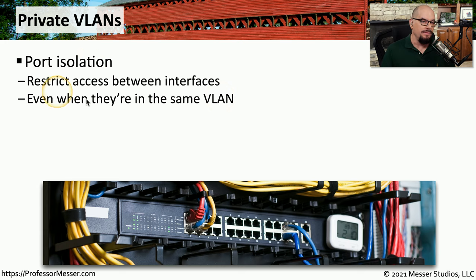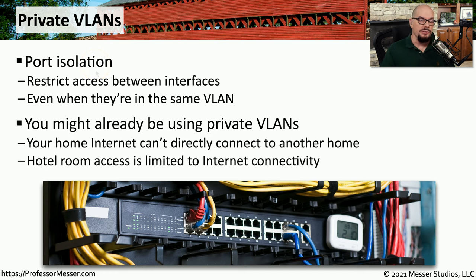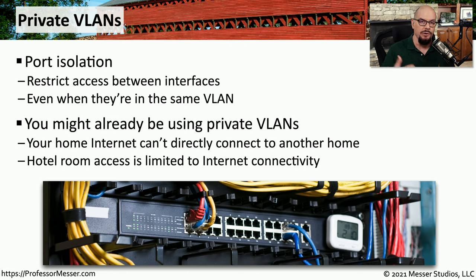Even if all of the devices are in the same VLAN, if you've turned on port isolation, there's no way to communicate between any of those devices. You might also see this at home — your home network can communicate to the internet, but you're not able to communicate to other homes in your neighborhood. Or perhaps you're in a hotel room, and your hotel room can communicate to the internet, but you can't communicate with any of the other devices in that hotel.